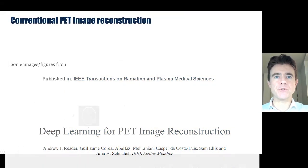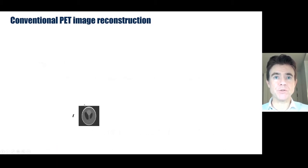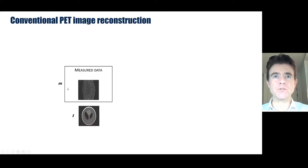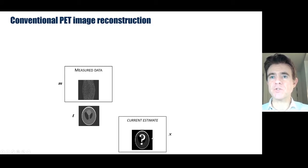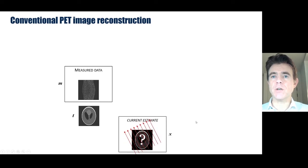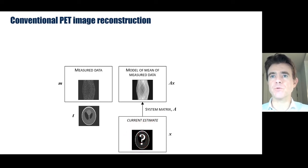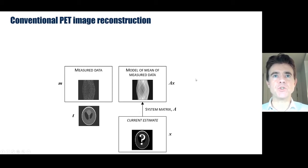Looking at conventional PET reconstruction, we have a radioactive distribution inside the field of view — the ground truth T. Back-to-back photon pairs are detected in a sinogram, the measured data vector M, and we try to estimate a representation of that ground truth, vector X. We use a forward model such as the x-ray transform or line integrals radon transform — a linear operator A, a system matrix — that gives a model of the mean data which we need to agree with the measured data.